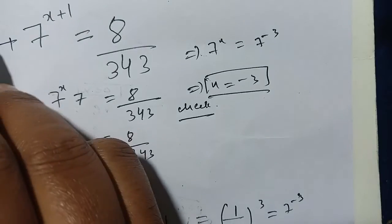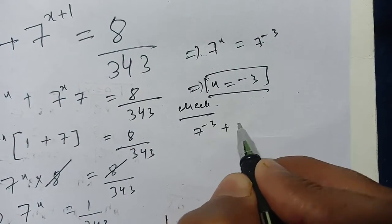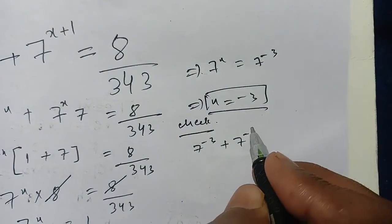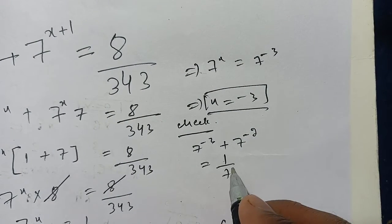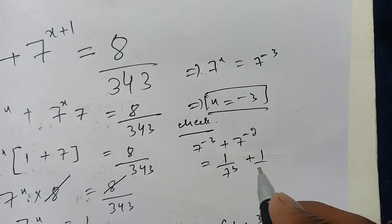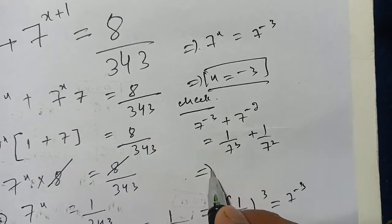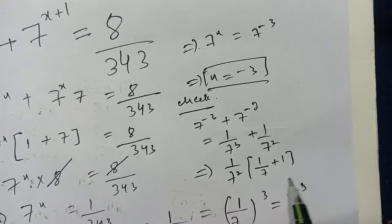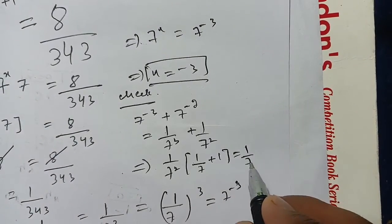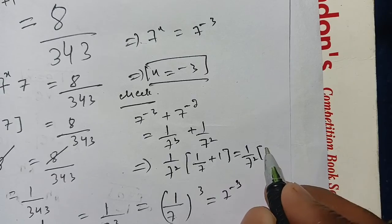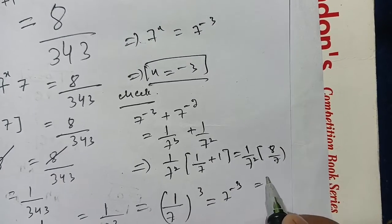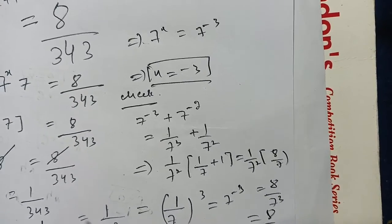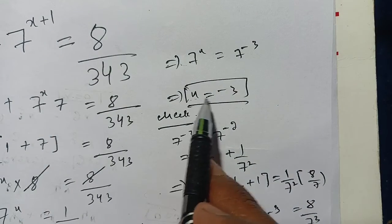Now we check: 7 power x means 7 power minus 3, and 7 power x plus 1 means 7 power minus 2. This gives 1 over 7 power 3 plus 1 over 7 power 2. Taking 1 over 7 power 2 as common: 1 over 7 power 2 times (1 over 7 plus 1), which becomes 8 divided by 7 power 3. This equals 8 divided by 343, which matches the right-hand side. Thus x equals minus 3 is our solution.